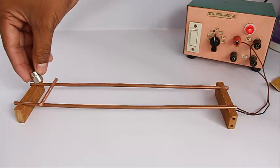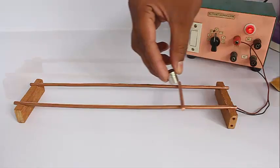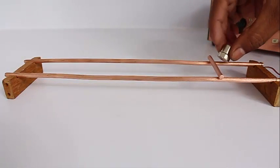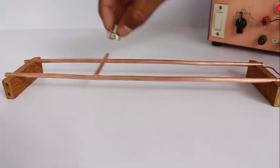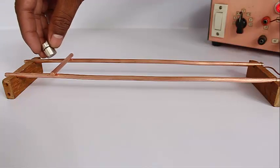The current passing through the copper rod creates a magnetic field around it, and this magnetic field with the strong magnet gets repelled or attracted, causing the rod to get pushed.